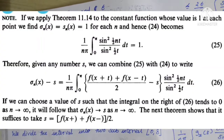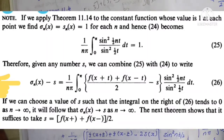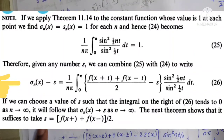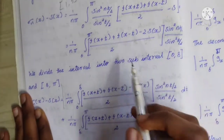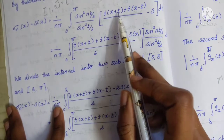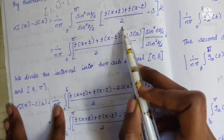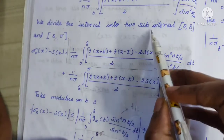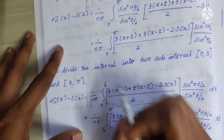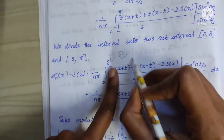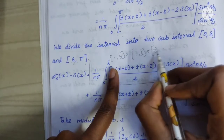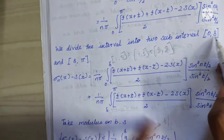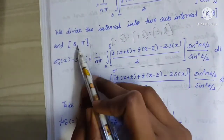From that note: σₙ(x) − s(x) = (1/nπ) ∫₀^π [f(x+t) + f(x−t)] / 2 · [sin²(nt/2) / sin²(t/2)] dt. Next step: (1/nπ) ∫₀^π [f(x+t) + f(x−t) − 2s(x)] / 2 · [sin²(nt/2) / sin²(t/2)] dt. We divide the interval [0, π] into two sub-intervals: [0, δ] and [δ, π].